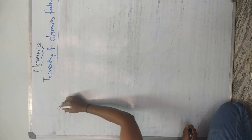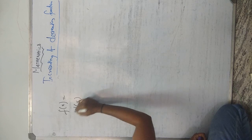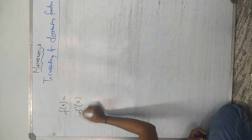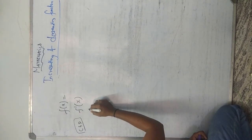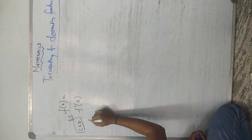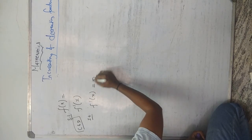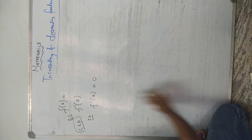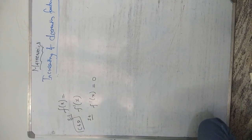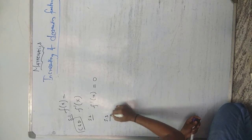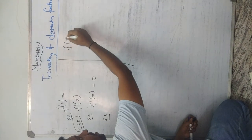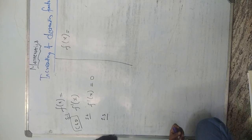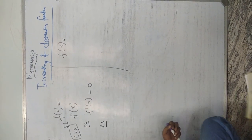Whatever question they give, there are a few tricks — short increasing/decreasing function method. Step 1: whatever the question f(x) is equal to — differentiate one time. We have already been taught differentiation in the continuity and differentiation chapter. Step 2: put f'(x) equal to zero. Step 3: find out the critical points — f'(x) equal to zero. For example, textbook page number 202, example number 10.